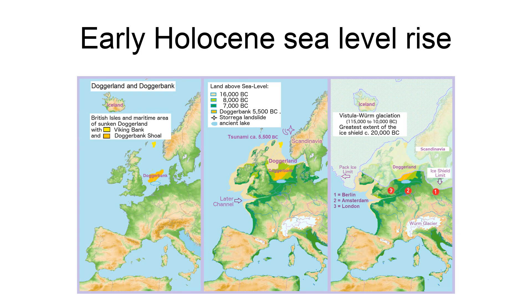The early Holocene sea level rise, EHSLR, was a significant jump in sea level by about 6 dm during the early Holocene, between about 12,000 and 7,000 years ago, spanning the Eurasian Mesolithic.